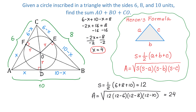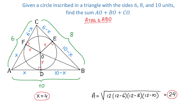So we found the area of triangle ABC, and this area is 24 square units. Now let's look at triangle ABO. In this triangle, the base is 10 units and the height is R. We can find the area by multiplying one half by the base 10 and by the height R. One half times 10 equals 5, and 5 times R is 5R.